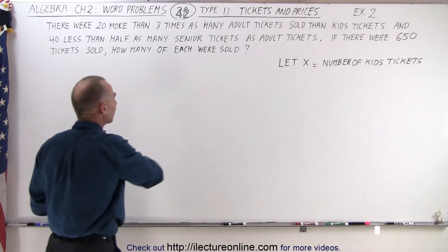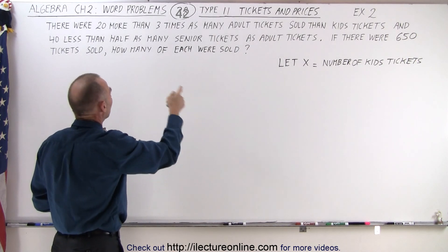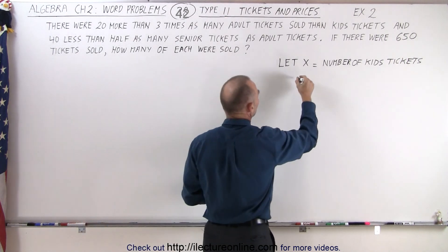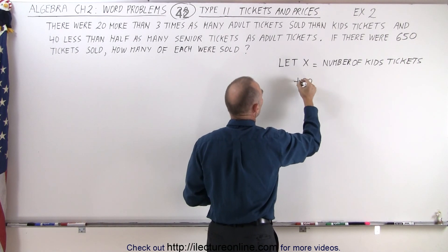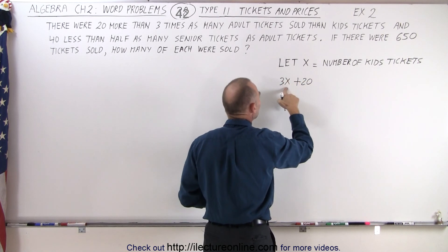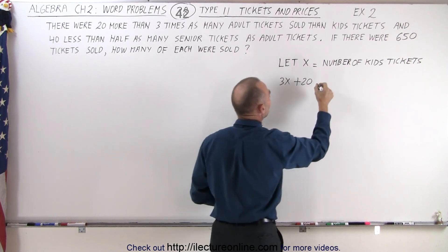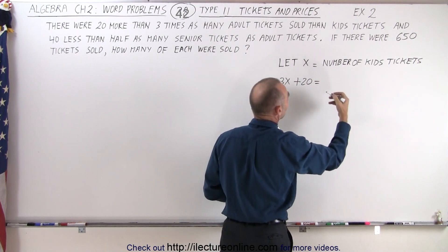Now we need to express the number of adult tickets in terms of x. Twenty more than three times as many. So plus twenty is twenty more, and 3x is three times as many as kids tickets plus twenty. Twenty more than three times as many, and that equals the number of adult tickets.